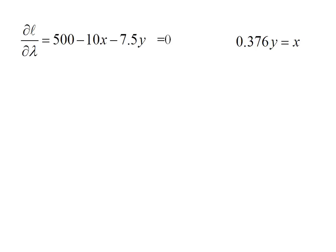So this is where we left off in part one. We had just found our 0.376y equals x, and now we're going to go back and use our one remaining equation, our partial derivative with respect to lambda. That was our constraint: 500 minus 10x minus 7.5y equals 0.